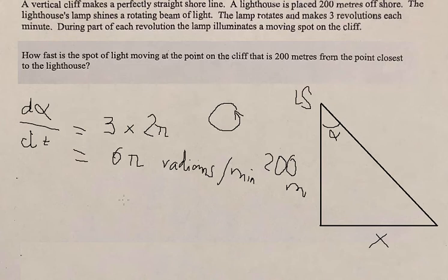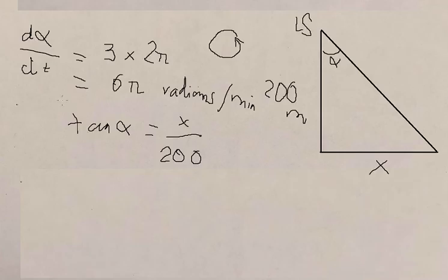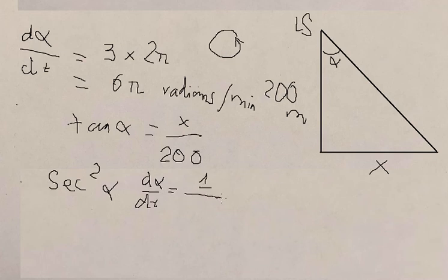Next we have tan α equals x divided by 200. Later we do the first derivative on both sides. You got sec² α times dα/dt equals 1 over 200 times dx/dt.